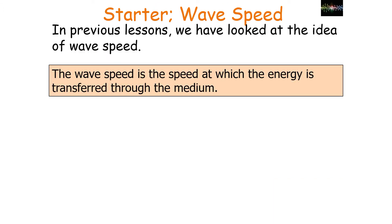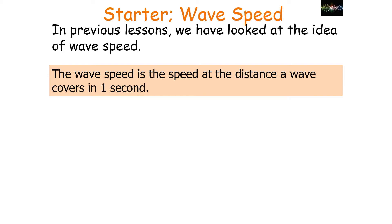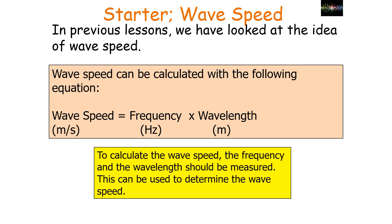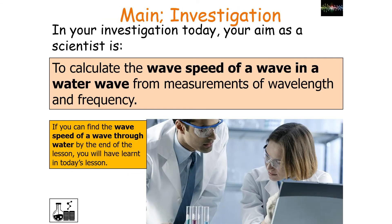In previous lessons we've looked at the idea of wave speed. Wave speed is the speed at which energy is transferred through a medium — it is the distance a wave covers in one second. We can calculate wave speed with the following equation: wave speed in meters per second is equal to frequency in hertz multiplied by wavelength in meters. To calculate the wave speed, the frequency and the wavelength should be measured.